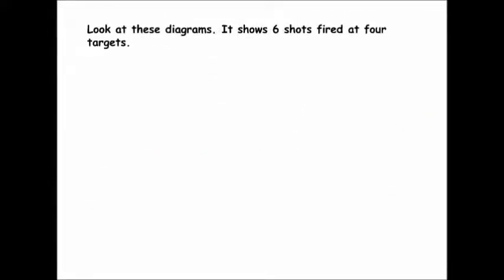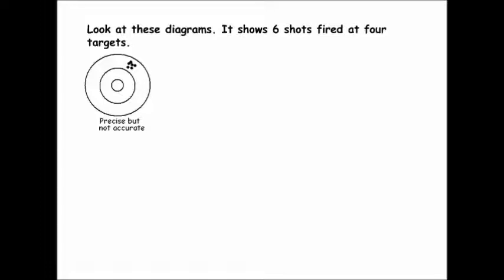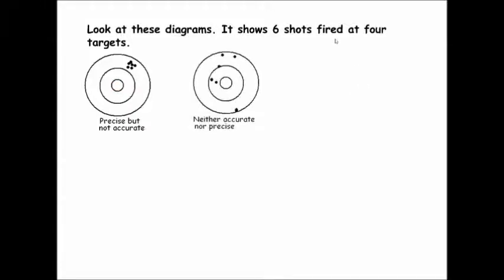Look at these diagrams showing six shots fired at four targets. In target one, the shots are precise but not accurate. They're precise simply because they're all very close to each other, but they're not accurate because they're not anywhere near the bullseye. The closer they would be to the bullseye — the accepted value — the more accurate they would be.